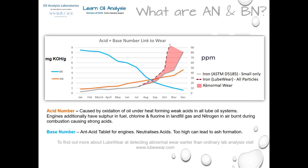In engines, the problem of acid formation is compounded by the fact that fuel being burnt can form strong acids such as nitric acid from nitrogen in the air. Sulfuric acid — the same acid found in battery acid, drain cleaners, and acid rain — is generated from the sulfur in liquid fuel or the hydrogen sulfide in sour methane gas fuels.